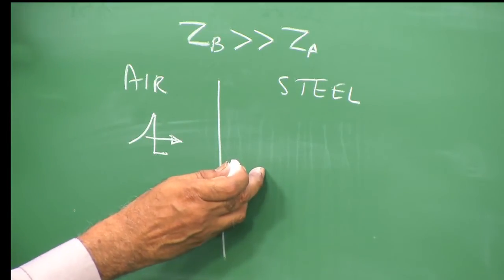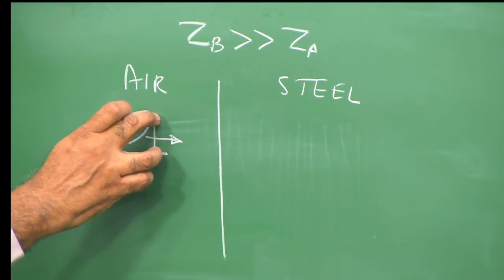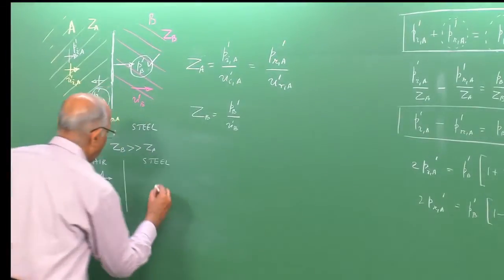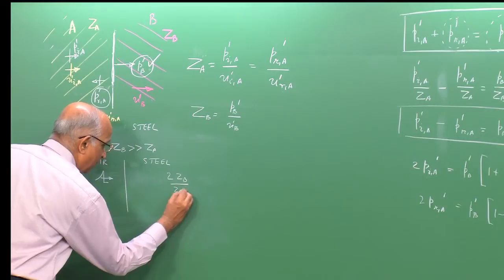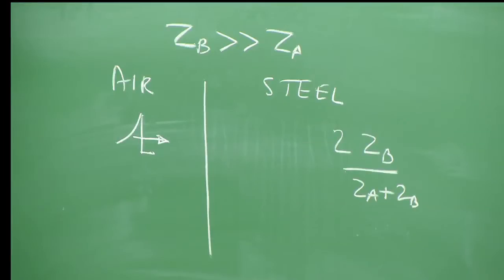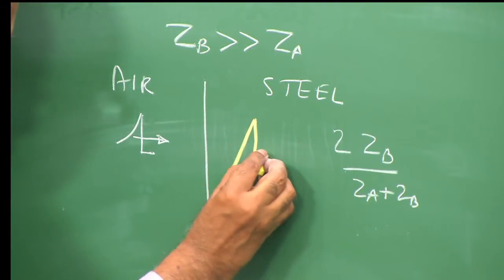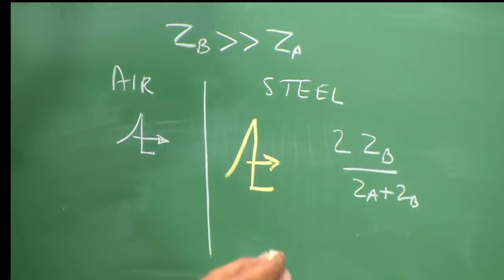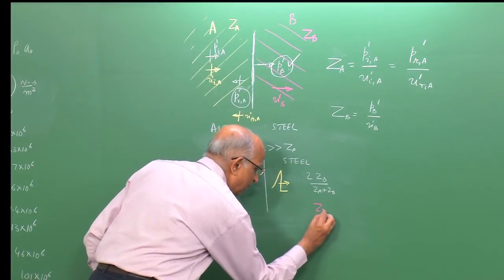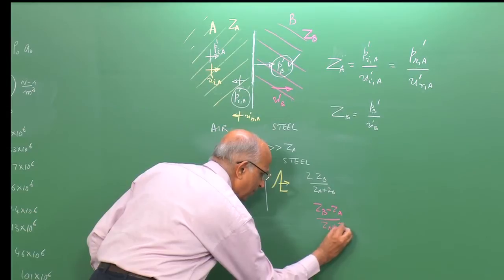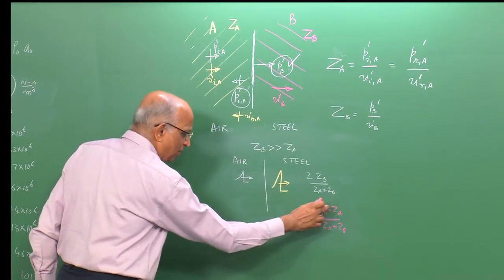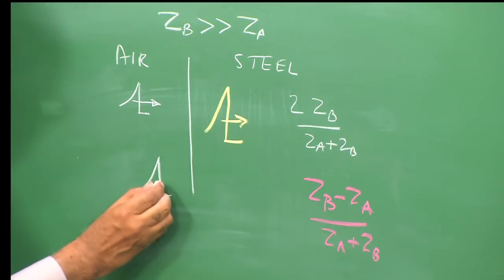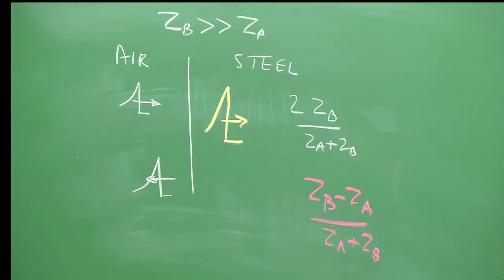The transmitted pressure is 2Z_b / (Z_a + Z_b) times p_ia. Since Z_b >> Z_a, this factor approaches 2, so the magnitude of the pulse transmitted into steel is higher than the incident. The reflected pressure is (Z_b − Z_a)/(Z_b + Z_a) — since Z_b >> Z_a, this is a strongly positive number, giving a reflected compression of similar magnitude.